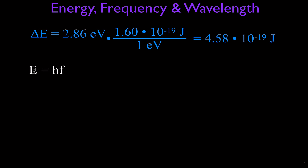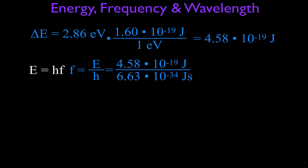We're going to use the equation that the energy in joules is equal to Planck's constant times the frequency. We want to first determine the frequency, so rearranging: frequency equals energy divided by Planck's constant. The energy for this equation has to be in joules, not electron volts. Therefore we get 4.58 times 10 to the minus 19 joules divided by 6.63 times 10 to the minus 34 joule-seconds — that's Planck's constant — giving us a frequency of 6.90 times 10 to the 14 hertz.